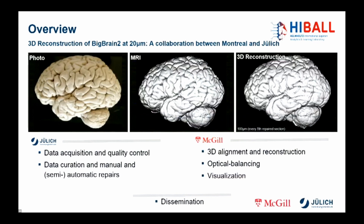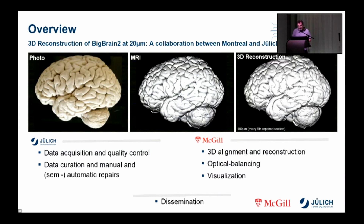The creation of a 3D reconstruction of BigBrain with a resolution of 20 microns requires not only a considerable amount of time and personnel but also a lot of skills and experience in many fields of modern image processing, and therefore cannot be done by one institute alone in a reasonable amount of time. As with BigBrain 1, the data were collected and created at Jülich. The manual repairs and the calculation of initial 3D reconstructions with up to 100 micron resolution were also done at Jülich. However, based on these repaired sections, the MNI is computing the 3D reconstruction with a final resolution of 20 microns, which will then be made available to the community.